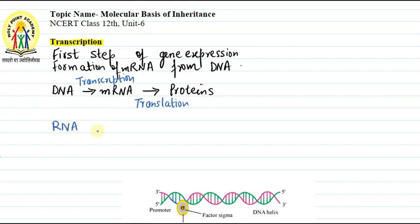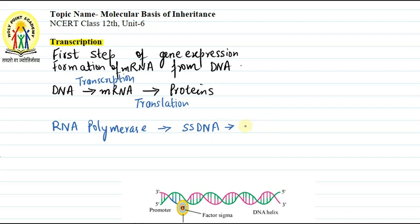RNA polymerase is the main enzyme used in order to synthesize the complementary RNA strand. RNA polymerase uses single-stranded DNA as a template, and from that template it synthesizes a complementary RNA strand.